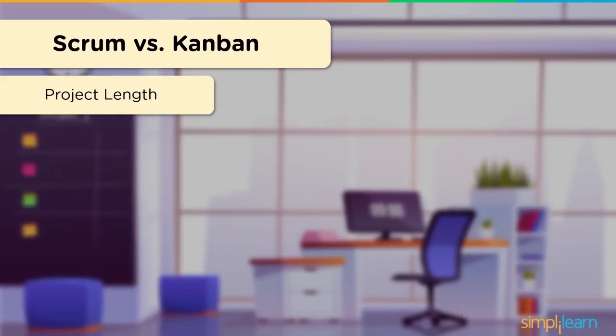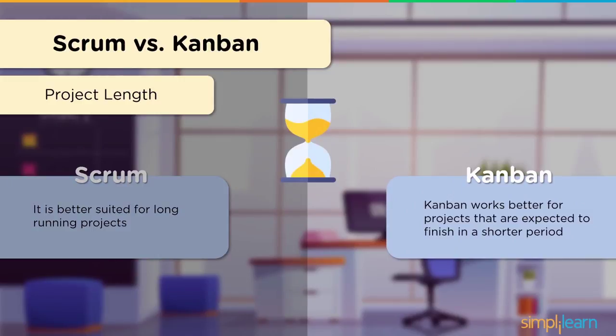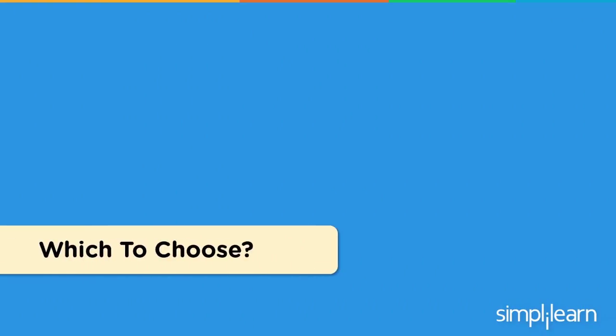Finally, let's look at project length. Scrum is better suited for longer projects, while Kanban is better suited for projects that can be completed in a shorter period of time. So which one should you choose? Selecting between these two methods is mainly based on the requirements of your team. If you expect a shorter project, want to make changes at any time, and don't want specific job roles, then Kanban is the framework for you. If you want a long-running project with different job roles and cross-functional teams, Scrum is the answer. Based on the differences we discussed, you can make an informed decision.